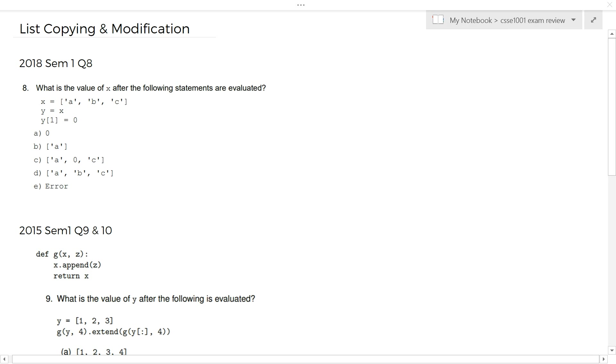First question we're going to do is 2018 semester 1, question 8. Again, you've always got paper and pen, let's write it out. So we get given this code and we're asked, what is the value of x after the statement is evaluated? First line, x equals a, b, c. I'm lazy, I'm not putting the quotes in. So, y equals x.